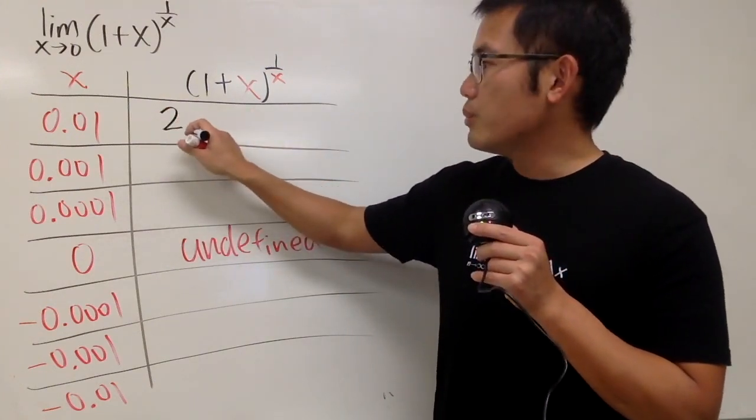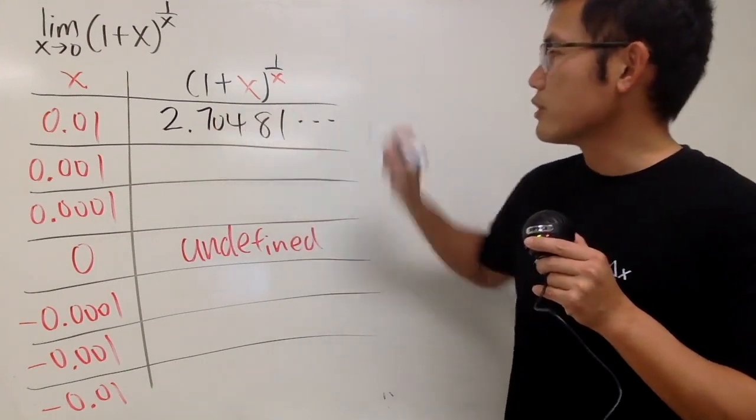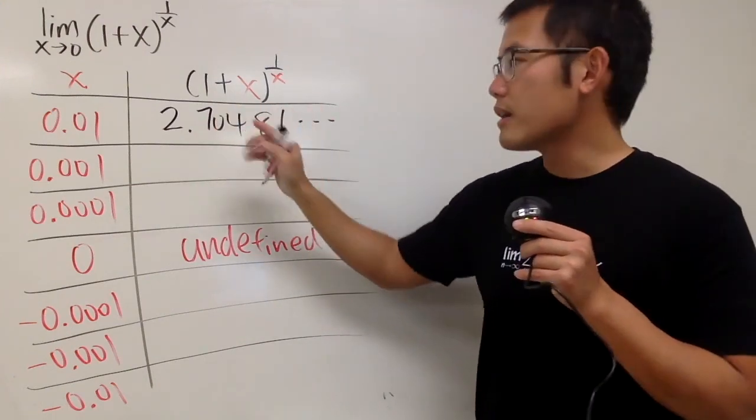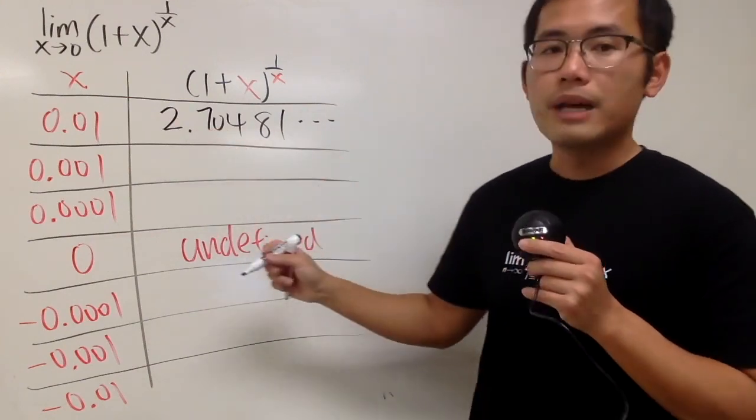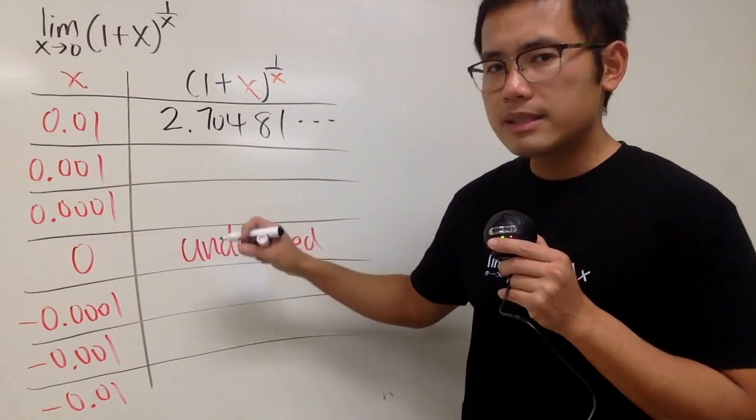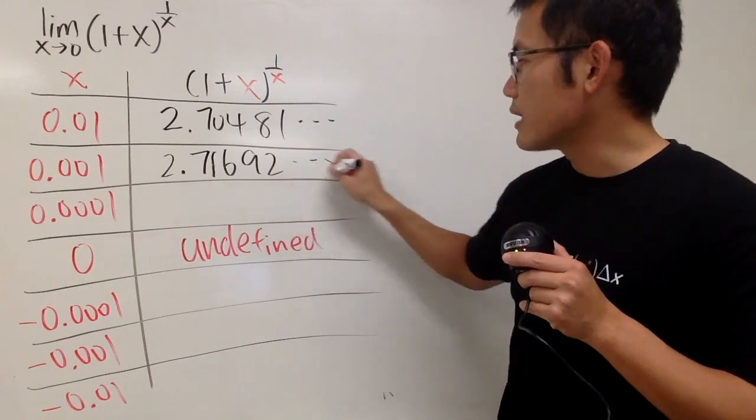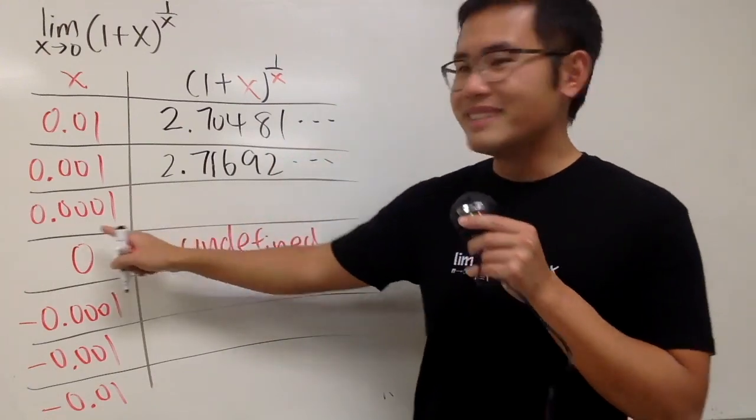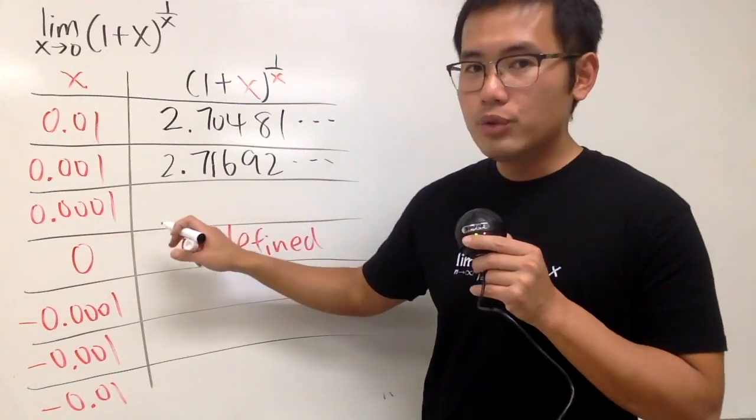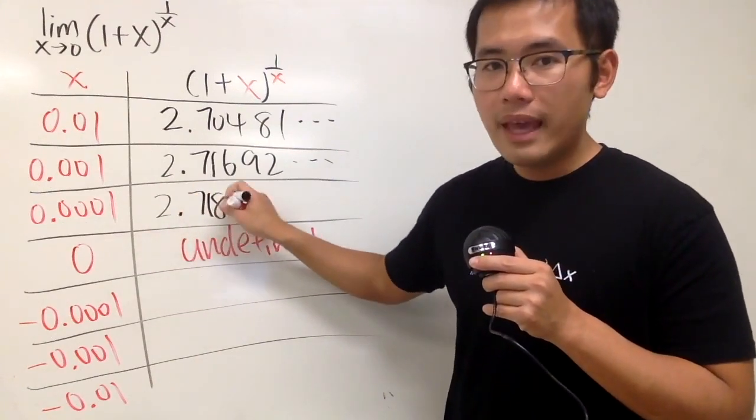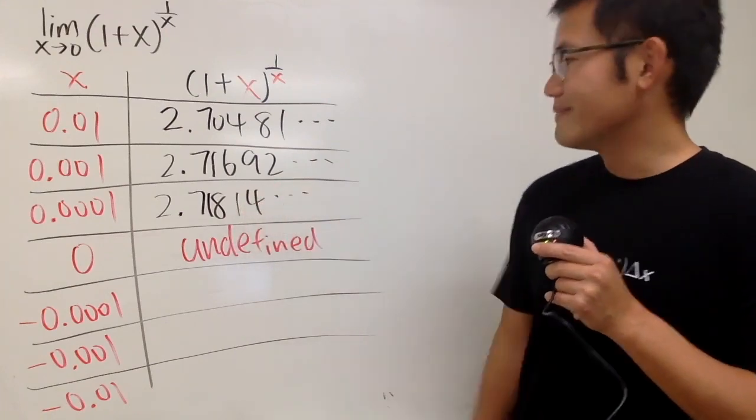Here are the answers. When x is 0.01, we get 2.70481. I'm just writing down the first five digits after the decimal point. Next, we have 2.71692. And then when x is 0.0001, we end up with 2.71814.